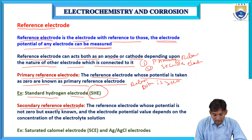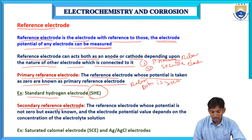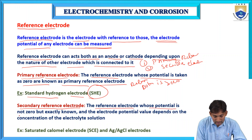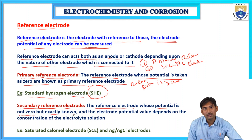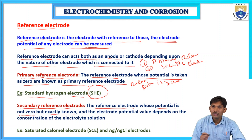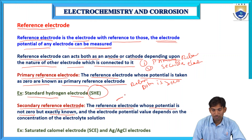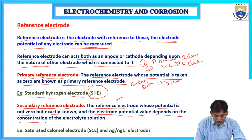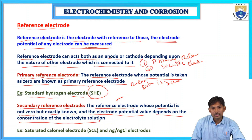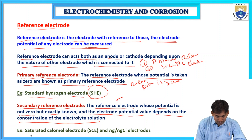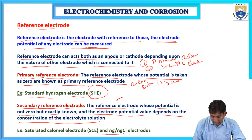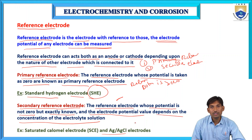The secondary reference electrode is one whose potential is not zero but is exactly known — it may be some positive or negative value. The electrode potential value depends upon the concentration of the electrolyte solution. For example, saturated calomel electrode and silver electrodes come under secondary reference electrodes.